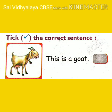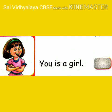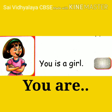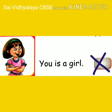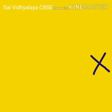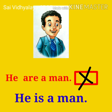Here is an exercise for you. This is a goat — only one goat, so we use is. That is correct, so we tick it. You are a girl — correct, we use are with you. He are a man — are is used for plural, but here there is only one man, so that sentence is wrong.